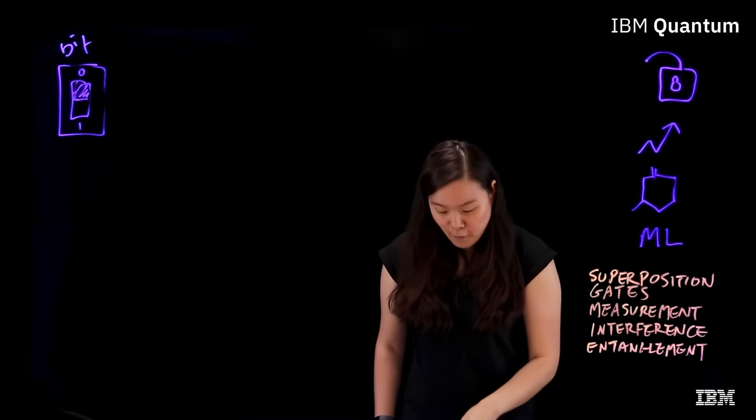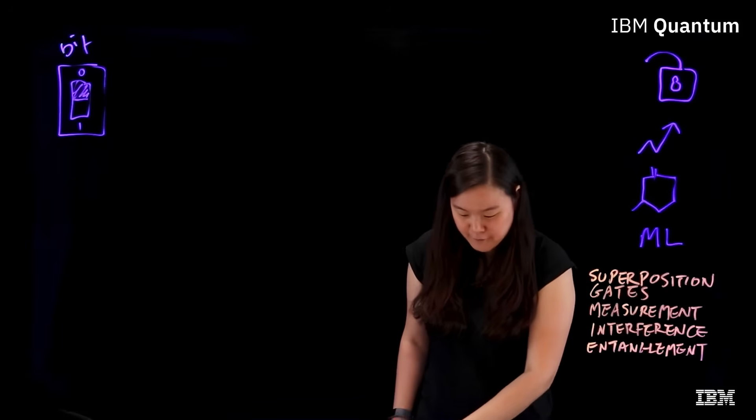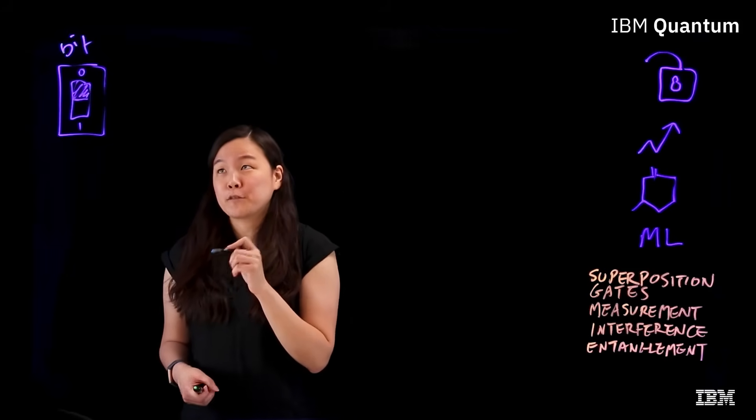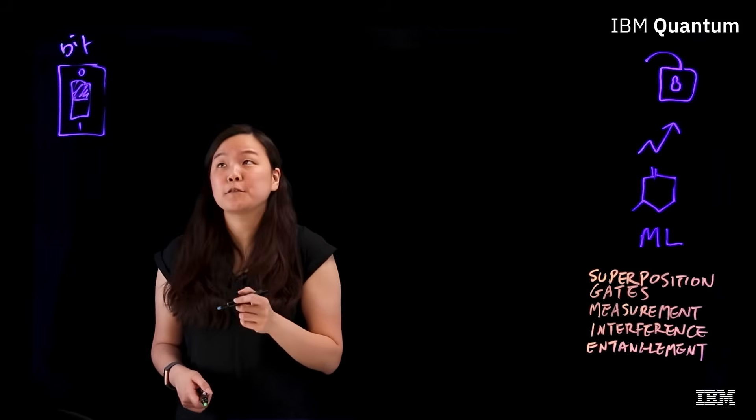Now let's talk about our first topic, superposition. Quantum computers do not use the simple zero and one bits. Instead, they use qubits.